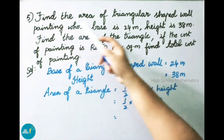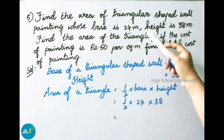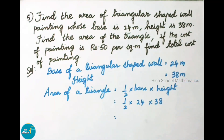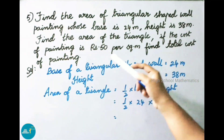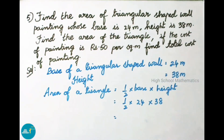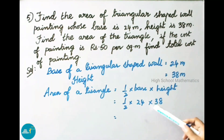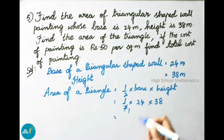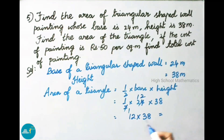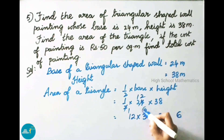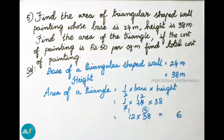See now question number 5. Find the area of a triangular shaped wall painting whose base is 24 meters and height is 38 meters. Area of the triangle equals half into 24 meters into 38 meters. After cancellation, we multiply 12 and 38. Working through: we get 456 square meters.